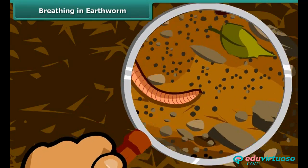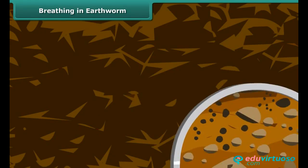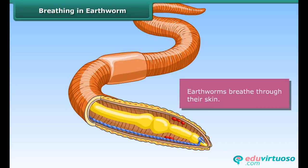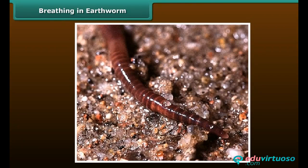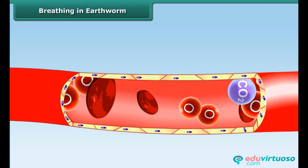Earthworms, like insects, do not have lungs, nor do they have a nose. They breathe through their skin. They absorb oxygen from air and soil — when oxygen comes in contact with their moist skin, it is absorbed through tiny blood vessels and circulated throughout the body.